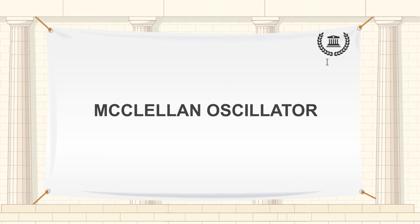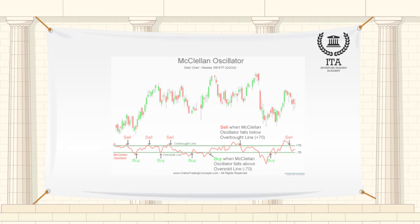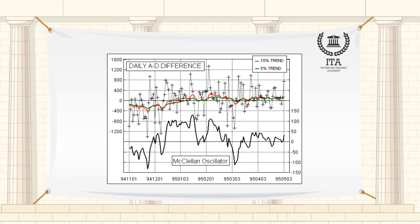Developed by Sherman and Marion McClellan, the McClellan Oscillator is a breadth indicator derived from net advances — the number of advancing issues less the number of declining issues. Subtracting the 39-day exponential moving average of net advances from the 19-day exponential moving average of net advances forms the oscillator.